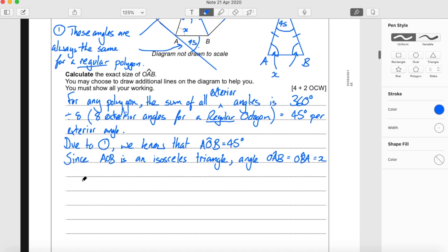And we also know, because OAB is a triangle, all interior angles of a triangle equal 180 degrees. We know that 180 degrees equals 45 from angle AOB plus 2X, these two angles here, OAB and OBA.